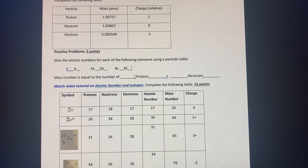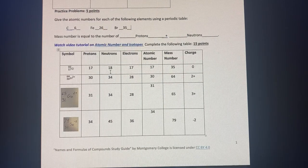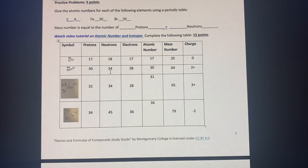We then have this fill in the blank where mass number is equal to the number of protons plus neutrons. And so using those concepts, we're able to come down and complete this chart.